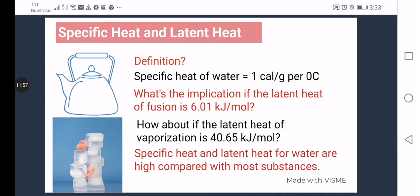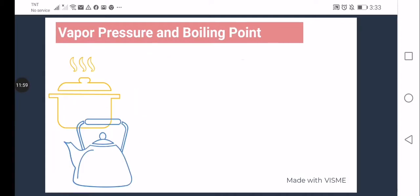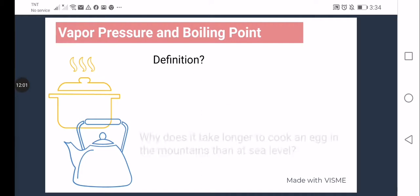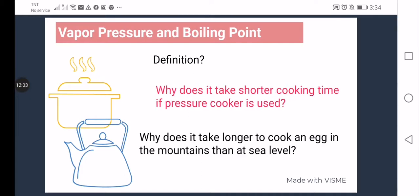Next, we have vapor pressure and boiling point. If spilled water from a glass is left unwiped on the table over time, it will dry up because liquid evaporates. How does it happen? Well, the individual molecules of water gain enough energy to escape as vapor. And as that gaseous vapor molecules exert pressure on the surface of the liquid, that is what we call as vapor pressure.